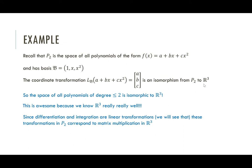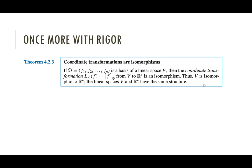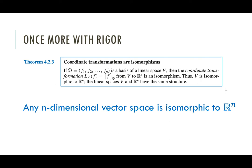Let me reinforce this. Theorem 4.2.3 says coordinate transformations are isomorphisms. If we have a basis F1, F2 to Fn for a linear space V, then the coordinate transformation that takes a vector and spits out its coordinate vector — whatever the coefficients on the linear combination of these basis vectors are — that's an isomorphism, and V is isomorphic to Rn. The linear spaces V and Rn have the same structure. In real terms: any n-dimensional vector space is isomorphic to Rn.